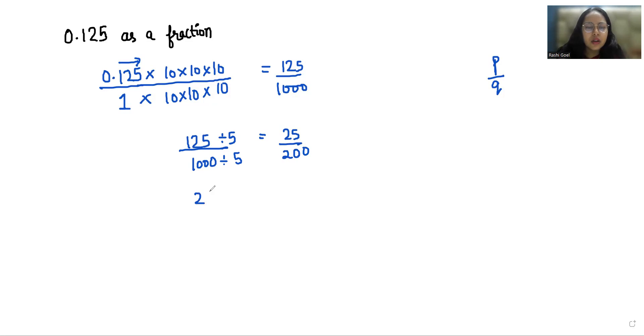Now again I am going to divide it by 5. So this gives us 5 and this gives us 40. This gives us 1 by 8. So 0.125 as a fraction is 1 by 8 in reduced form.